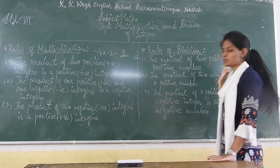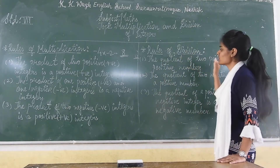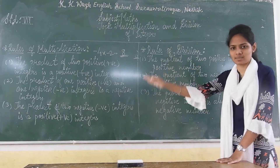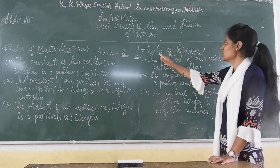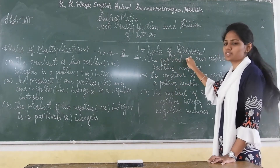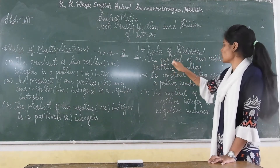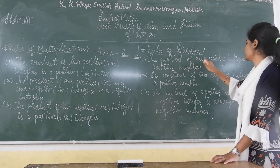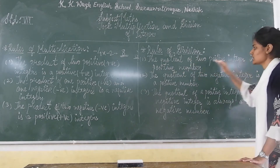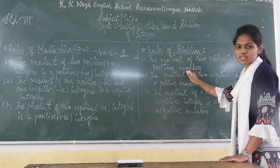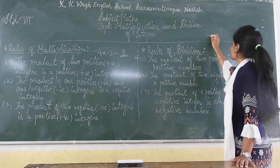We will come to the rules of division. The rules of division are the same as the rules of multiplication. The quotient of two positive integers is a positive number.